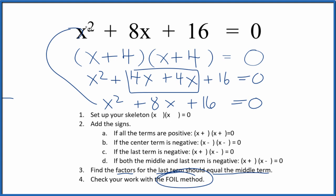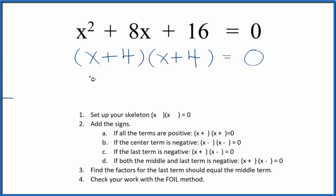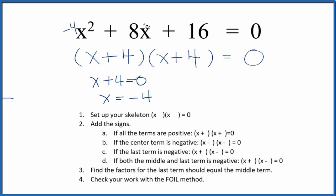Let's find the values for x that will make this side of the equation 0. We can say x plus 4 equals 0, so x equals negative 4. We have x plus 4 and x plus 4 here, so if we put negative 4 in for x and solve this, it equals 0. We know that we've done this correctly.